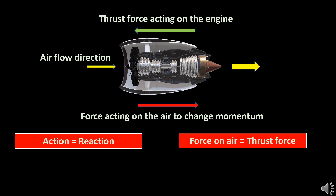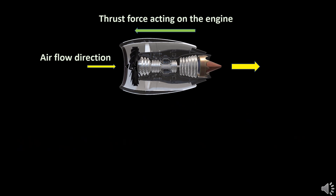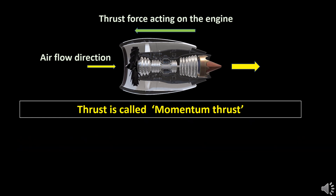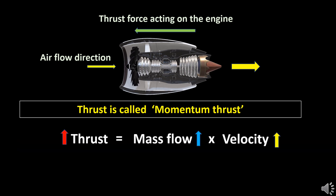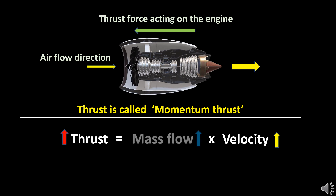This thrust force is called the momentum thrust. The thrust force can be increased by increasing the velocity of air flow, which we have just seen. Thrust can also be increased by increasing the mass flow rate m.